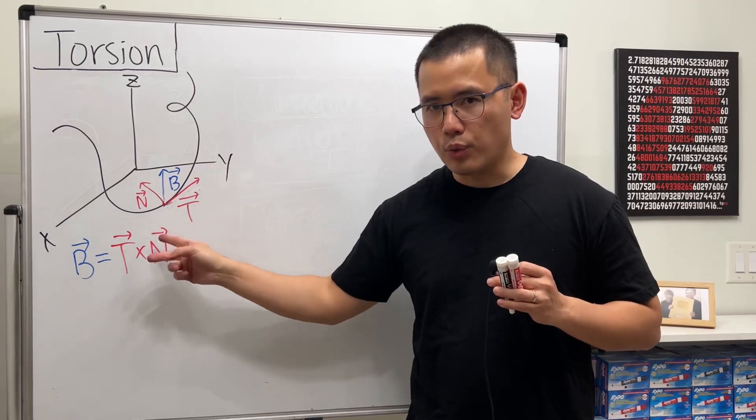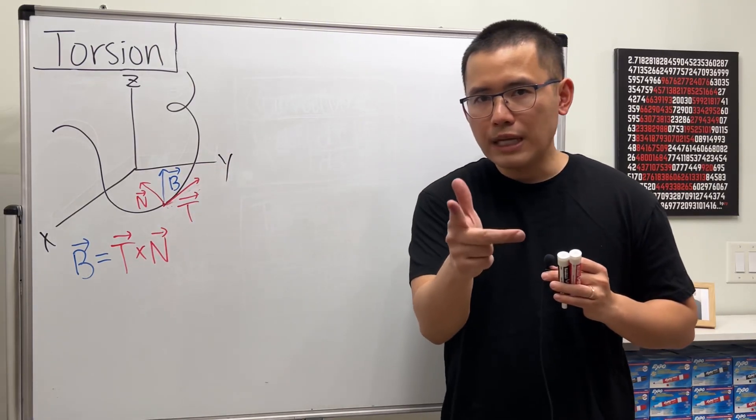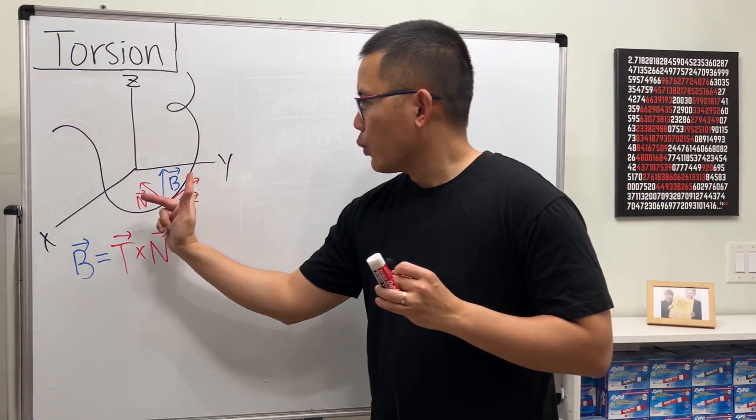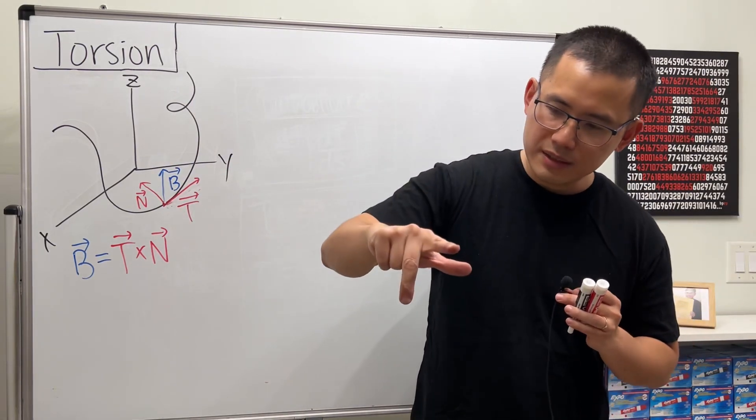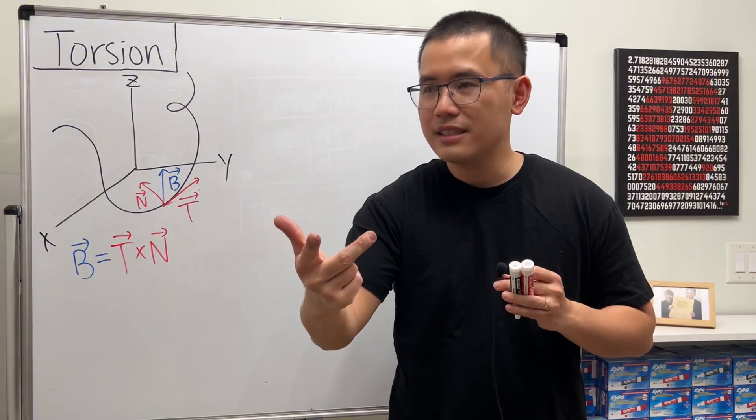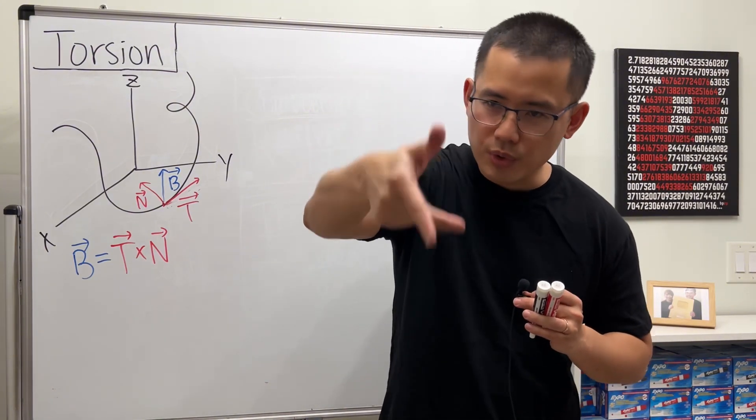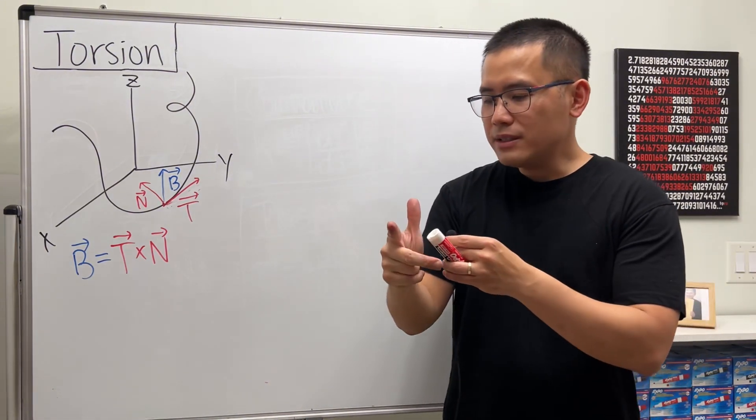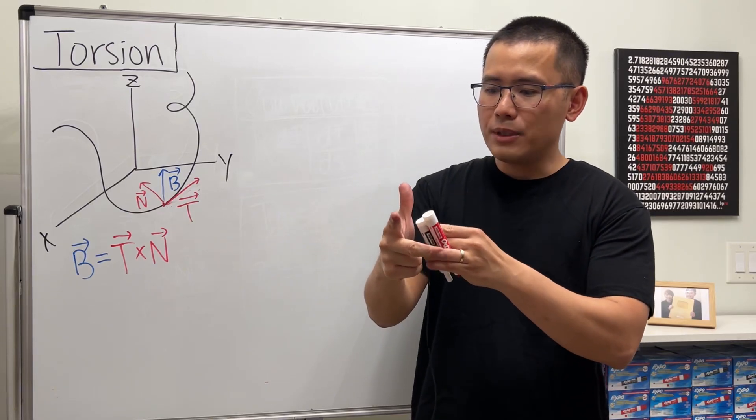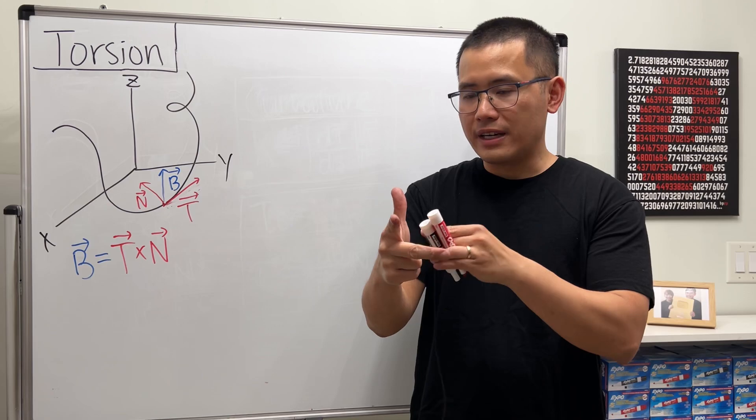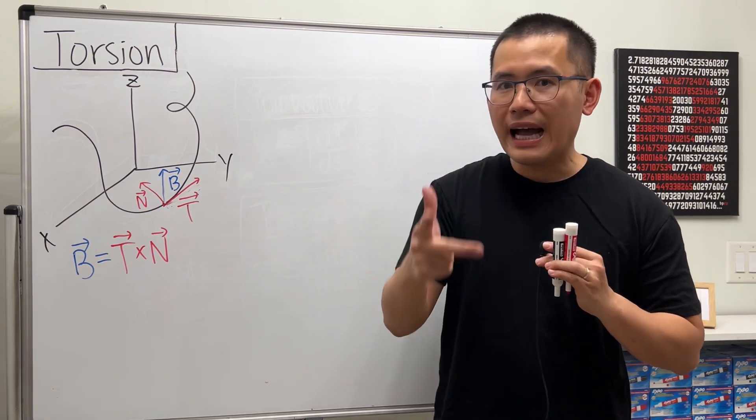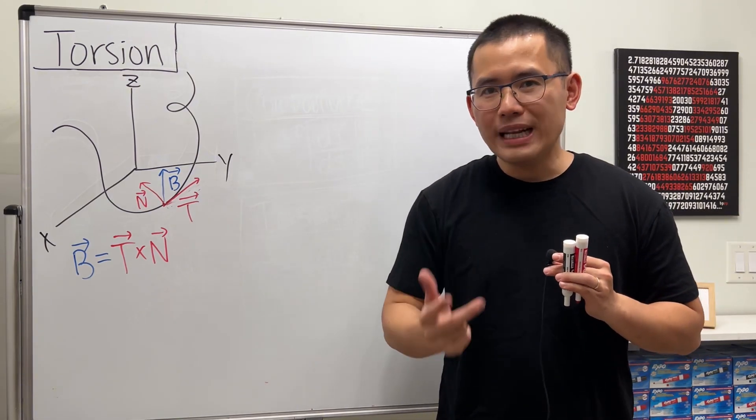All right, now the torsion is the following. Just hold up your hand like this, and then when you travel along the curve, sometimes you may turn like this, sometimes you may turn like that, sometimes you go up, sometimes you go down, right? The amount of twisting, or how much your body is rotating—and I'm talking about the unit binormal vector, the B right here—that is the torsion.